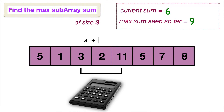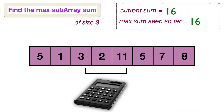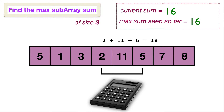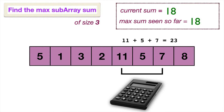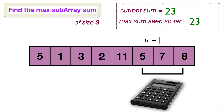Then we do three plus two plus eleven to give us sixteen, our new current sum, and we update the maximum sum. Moving on, two plus eleven plus five gives us eighteen — the greatest we've seen so far — so we update our max sum again. Next, eleven plus five plus seven gives us twenty-three, our new current sum and new maximum. Finally, the last three elements — five, seven, and eight — give us a current sum of twenty. Twenty isn't the maximum, so we don't update it. We return the maximum sum of twenty-three.